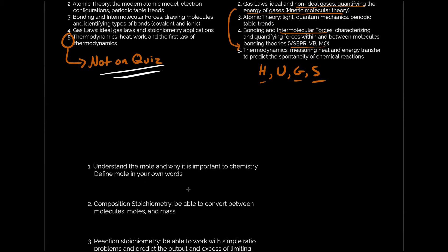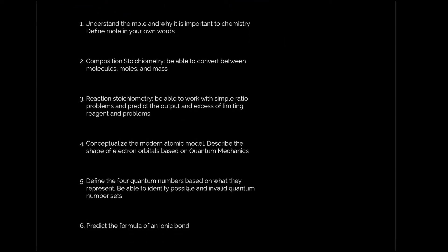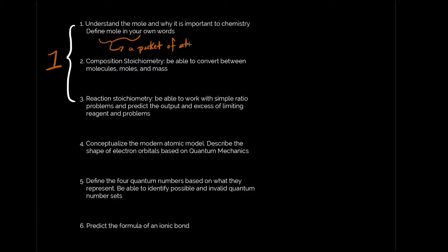In preparation for this outro quiz I have a list of ten things I want you to know — I'm considering these to be question types. We're going to start with fundamentals, going through each point in order. What I really recommend is that you redo the lesson quizzes from unit one through unit four. These first three question types come from unit one, starting with understanding the mole and why it's important to chemistry — you really want to be able to define a mole in your own words.